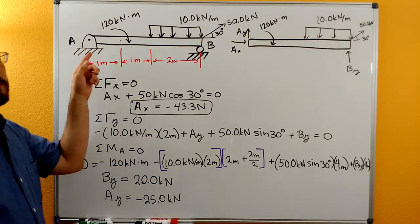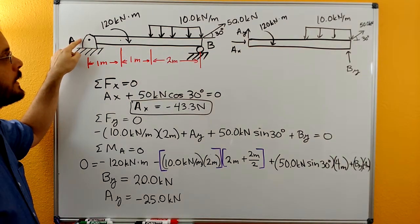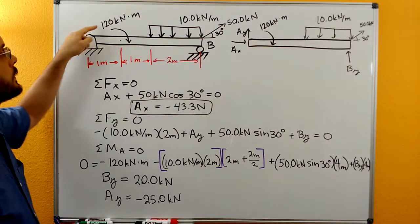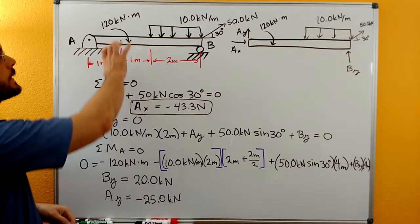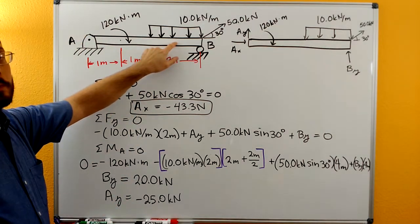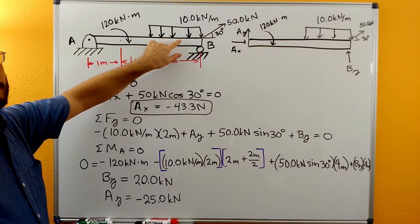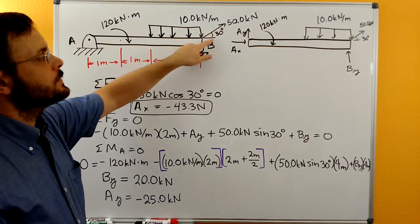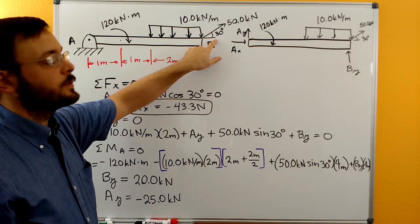So with this problem we have a rigid body that's supported by a smooth frictionless pin at A and a smooth frictionless roller at B. It has a 120 kilonewton meter couple moment that's acting in the clockwise direction. It has a 10 kilonewton per meter distributed load over here. It's a rectangular shape distributed load. And then we have a 50 kilonewton concentrated force that acts at this end B that's at a 30 degree angle.